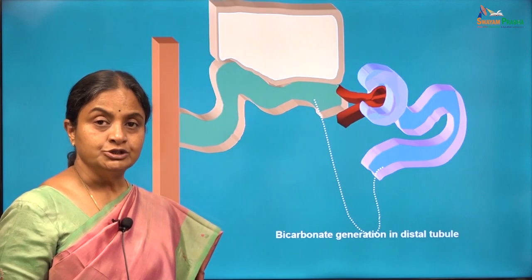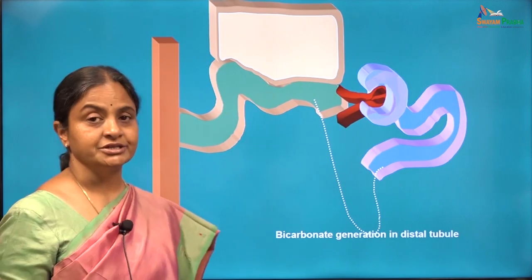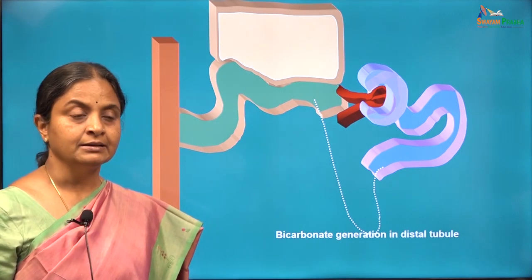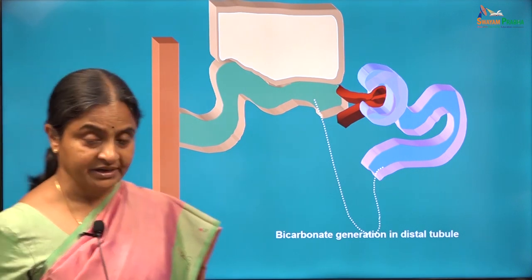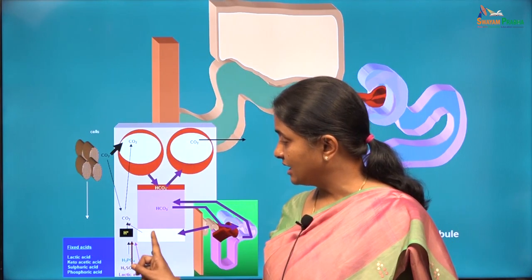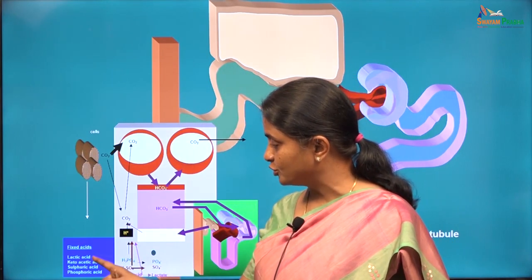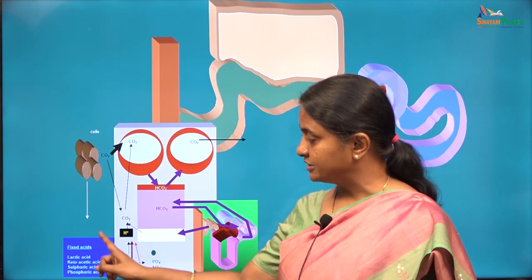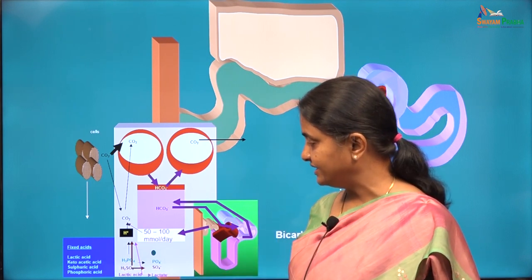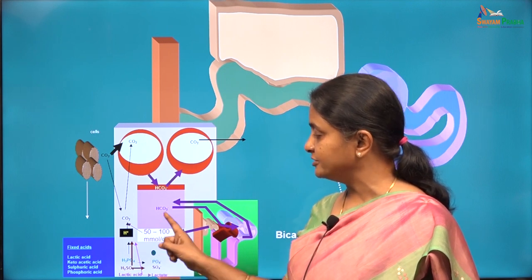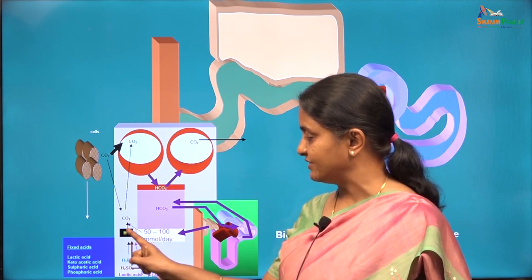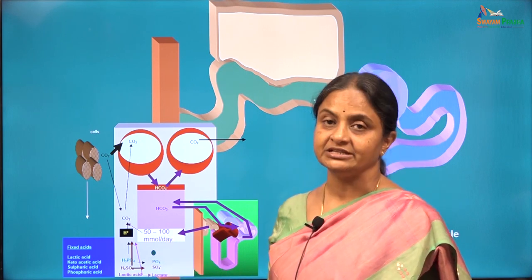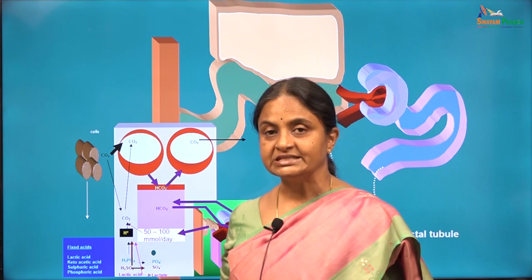We will now move on to bicarbonate generation in the distal tubule. The distal tubular cell generates bicarbonate to replace the bicarbonate consumed by the protons of the fixed acids. 50 to 100 millimoles of fixed acids are formed every day, that amount of bicarbonate is consumed daily, and that amount must be replaced by the distal tubular cell every day.